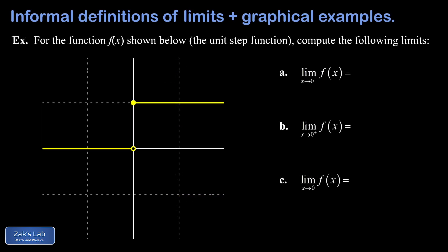Now we'll work through more examples. The first is the unit step function: it equals 0 when x is less than 0, and jumps to 1 at the origin, with f(0) = 1, staying at 1 for all x ≥ 0. For the limit as x goes to 0 from the left, x values are slightly negative, and every corresponding f value is 0. So that left-sided limit is 0.